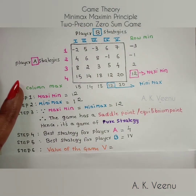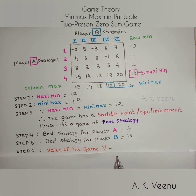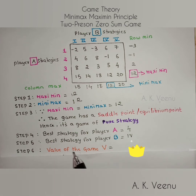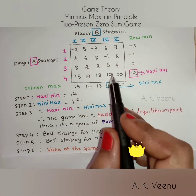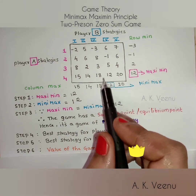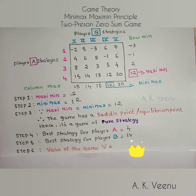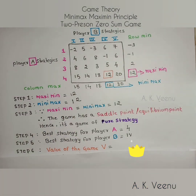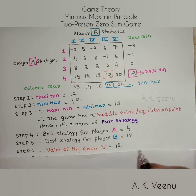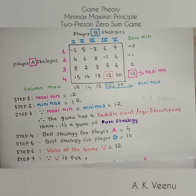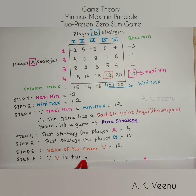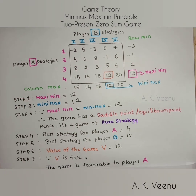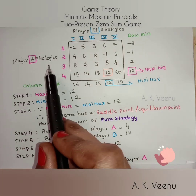The next important aspect is to find the value of the game. The value of the game is the amount of payoff at the saddle point or equilibrium point, which is 12. Since V is positive, the game is favorable to player A.